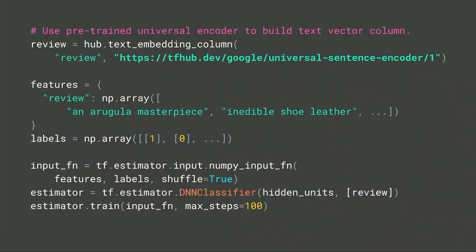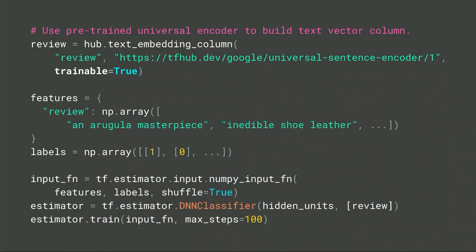The difference here is we're using it with a text embedding column so we can feed it into one of the high-level TensorFlow estimators — in this case the DNN classifier. You could also use the module as a function directly. Just like the image example, the text embedding column can also be trained with a lower learning rate if you have a lot of training data, which may give you better accuracy.